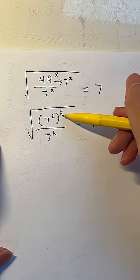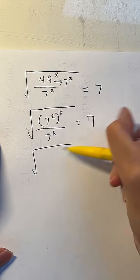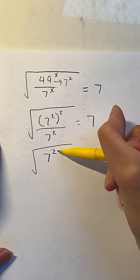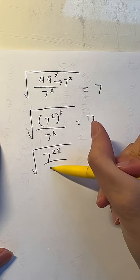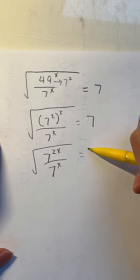And whenever we raise a power to an exponent, we keep the base and multiply the exponent. So it's going to be 2x. Divide that by 7 to the x power is equal to 7.